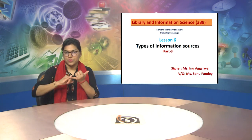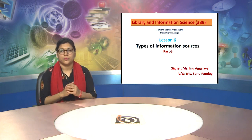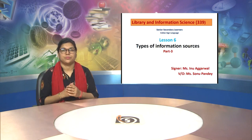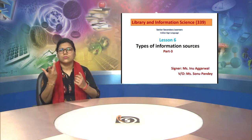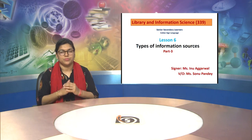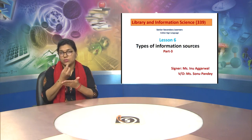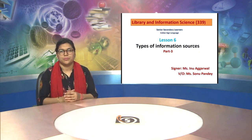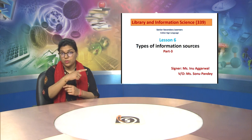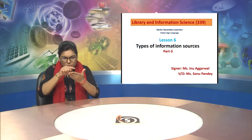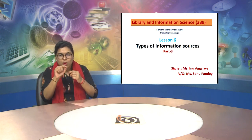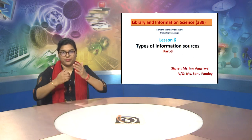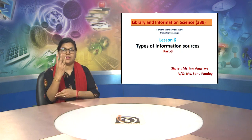Welcome to this educational video of N.I.O.S. Subject Library and Information Science, Code 339, Senior Secondary Level, Lesson 6: Types of Information Sources. In this lesson we will be talking about different types of information sources. This video is Part 3.